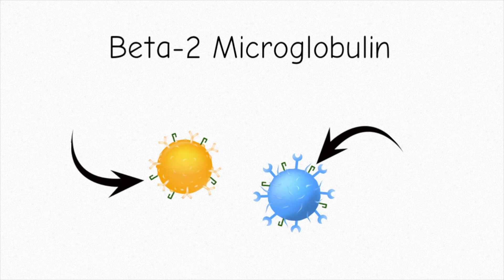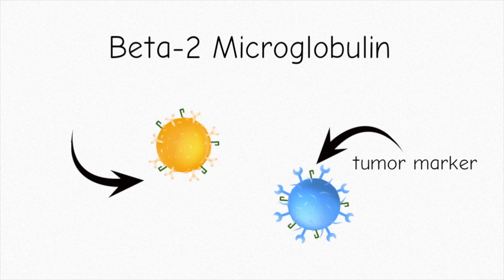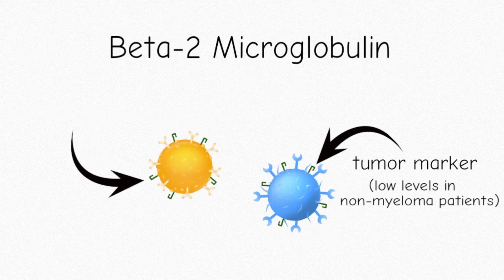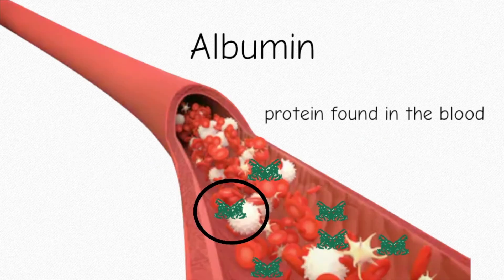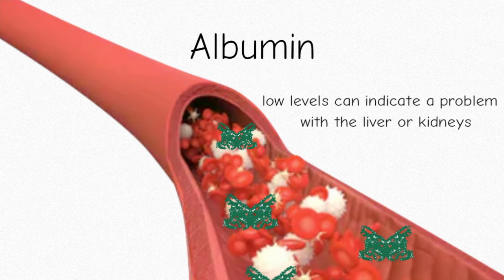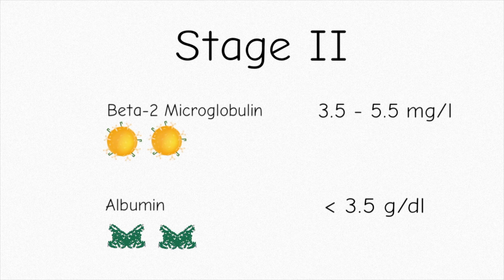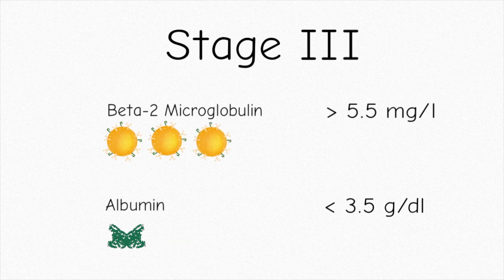Beta-2 microglobulin is found on the surface of many cells and is generally used as a tumor marker. In non-myeloma patients, these levels are very low. Albumin is a protein found in the blood that helps keep fluid within the bloodstream. Low levels of albumin can indicate a problem with the liver or the kidneys. As the stages of multiple myeloma increase, the beta-2 microglobulin level increases as well. However, the albumin level decreases.